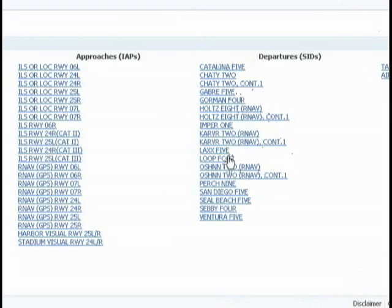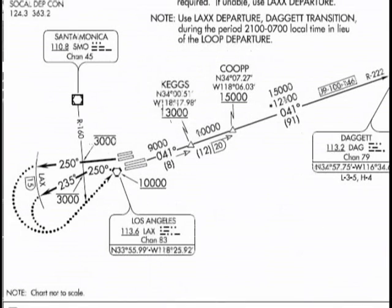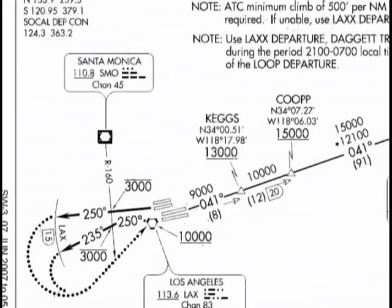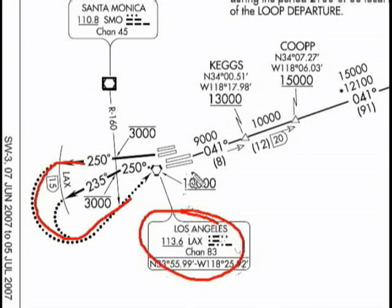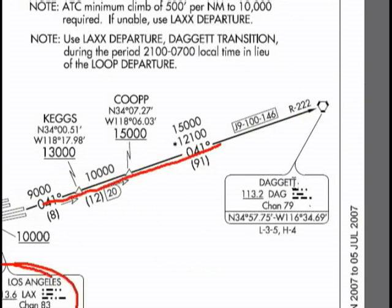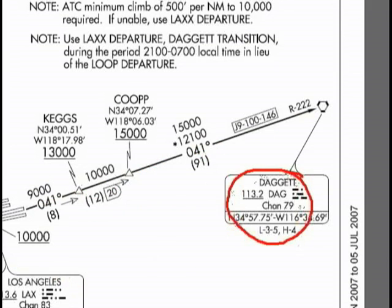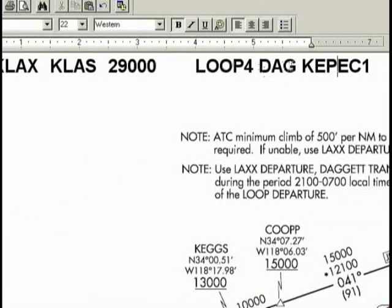We're going to click on LOOP 4 and pull up the plate for that. Now that we have our departure plate, we can start analyzing it. We're going to be taking runway 25, which is going to be our takeoff, and we're going to loop back to the Los Angeles VOR. Then we're going to take this route to Daggett right here, and if you look at our flight plan, it makes a lot of sense — because Daggett is the destination point we need to reach.